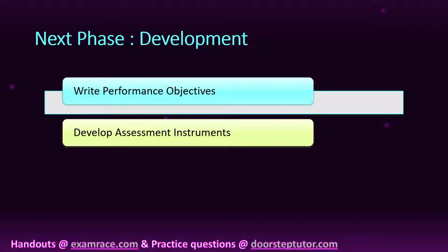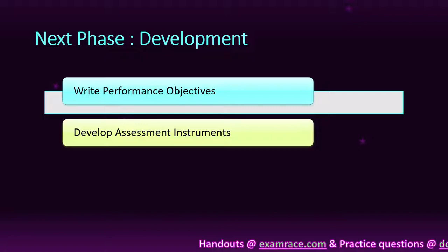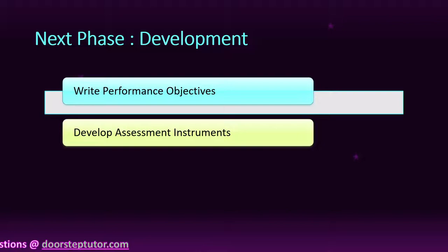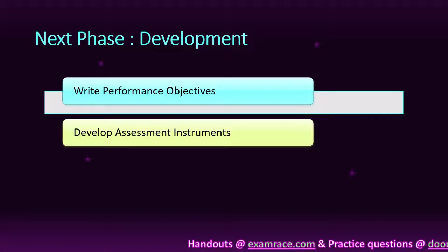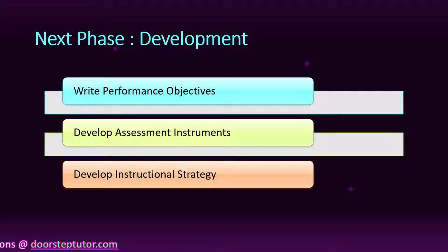The next step is to develop an assessment instrument. After analyzing the learner and making objectives, the teacher develops assessment techniques to assess the student based on the desired objectives. This includes developing criteria-referenced tests, behavior tests, pre-tests, and post-tests — all of these assessment instruments are developed in this step.